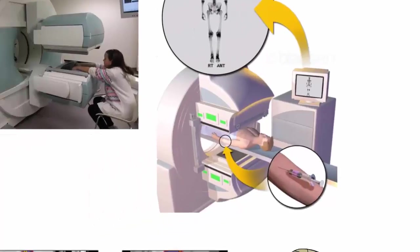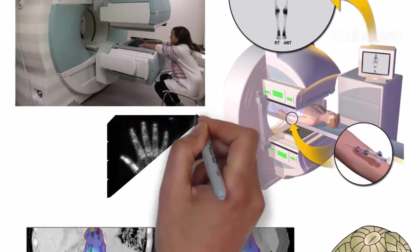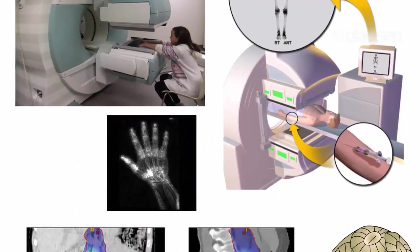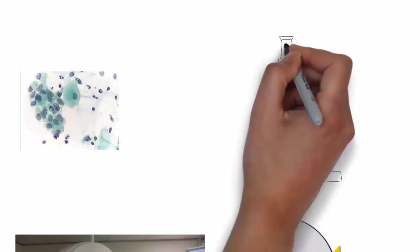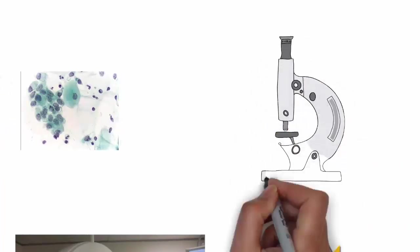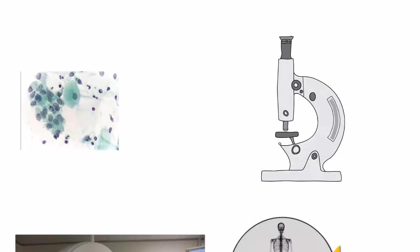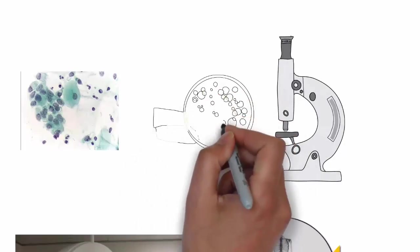A scanner detects the radioactive material and record the image of the bones on a special film. Now, sputum cytology. In sputum cytology, sputum is diagnosed under a microscope. The tumor cells can be visualized with this method.